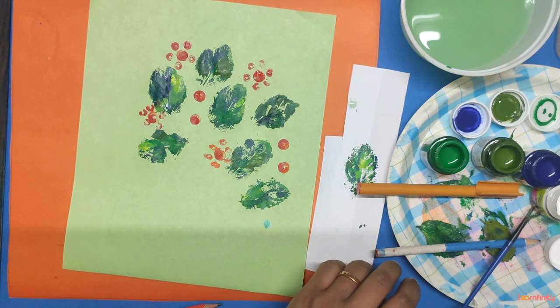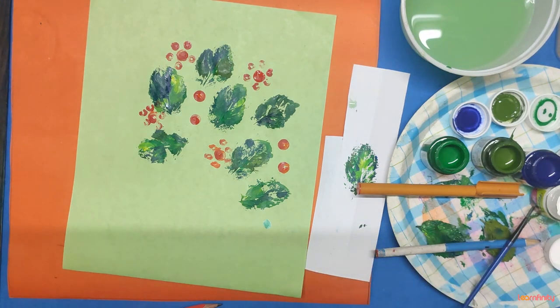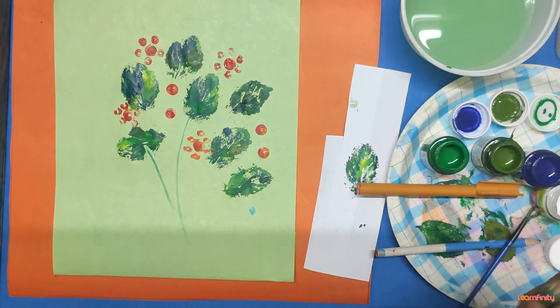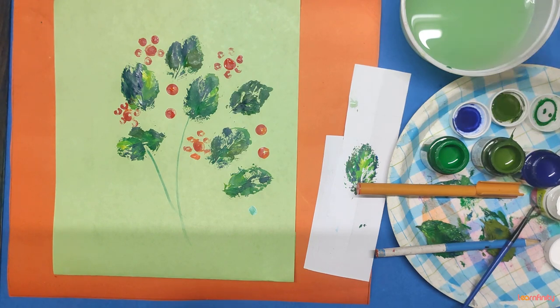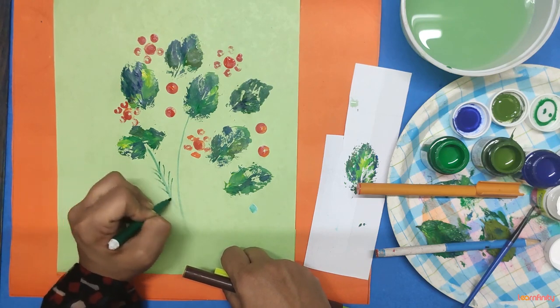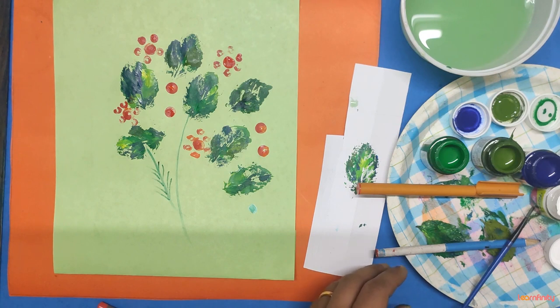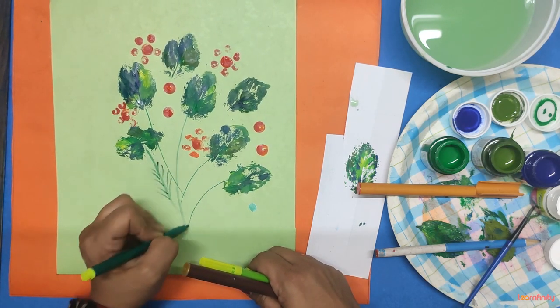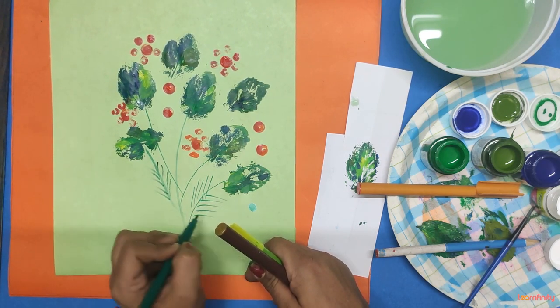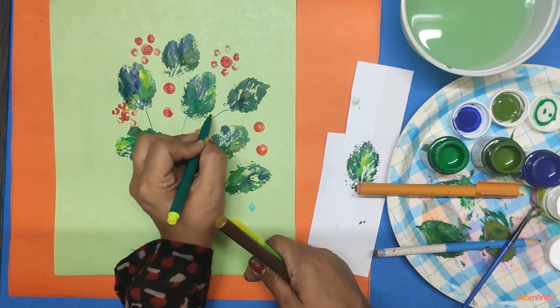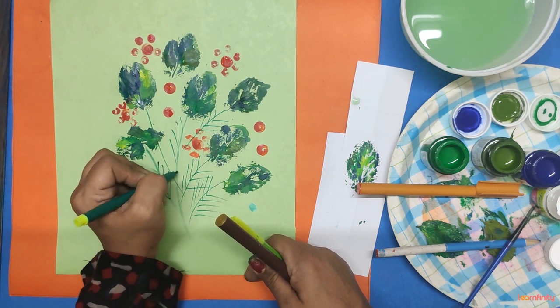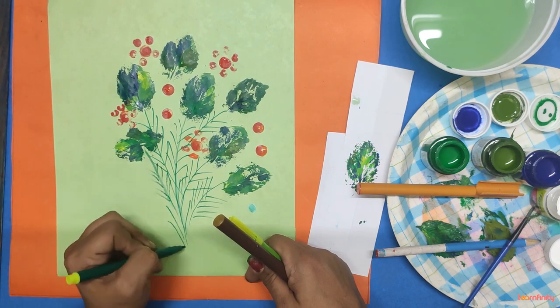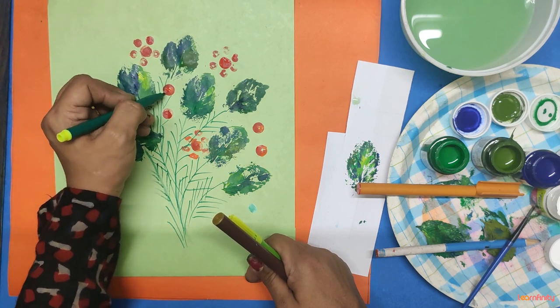Now I take sketch pens. See, like this, I am just drawing some lines. Like this, see, like this we are drawing the lines. Now, here and there I am adding some dots.